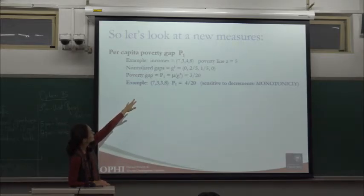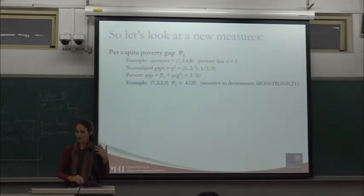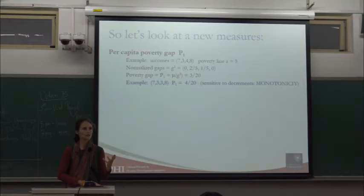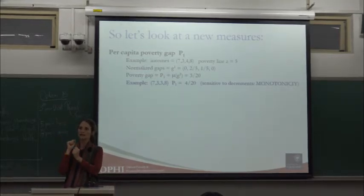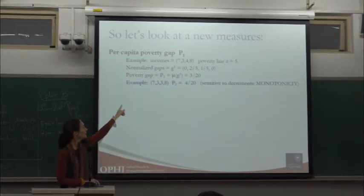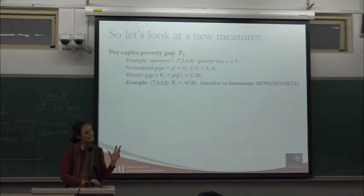By looking at how far people are below the poverty line, we add information. The poverty gap is the mean of normalized gaps. According to the Foster-Greer-Thorbeck measure, poverty changes if a poor person gets poorer. That property is called monotonicity. If you want a measure that reflects decrements in income below the poverty line, you need a measure that reflects monotonicity. The head count ratio doesn't. And that's important for policy — without monotonicity, a corrupt policy maker has an incentive to help only those 20 cents below the poverty line to get the biggest change in the head count.